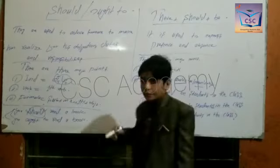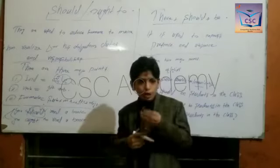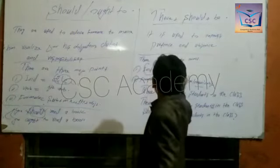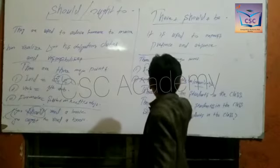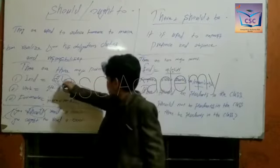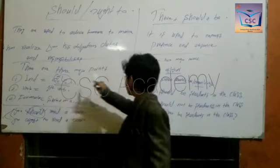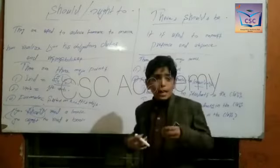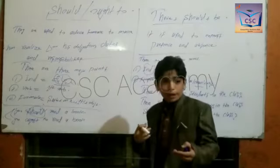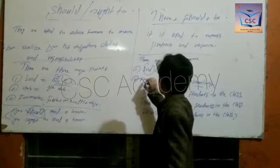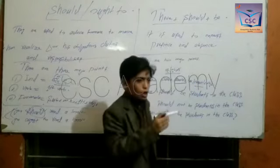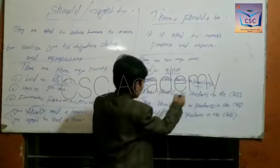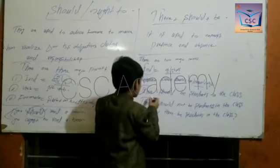The first one is identification. If you do not differentiate between these two identifications, it will be wrong and there will be many problems for you. The second one is formula. If you know the formula, you will make a sentence.